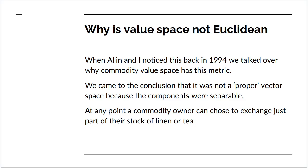You can take one of the components away and then you can recombine them later, or you can operate on the components individually and recombine them. At any point a commodity owner can choose to exchange just part of their stock of linen or just part of their stock of tea.